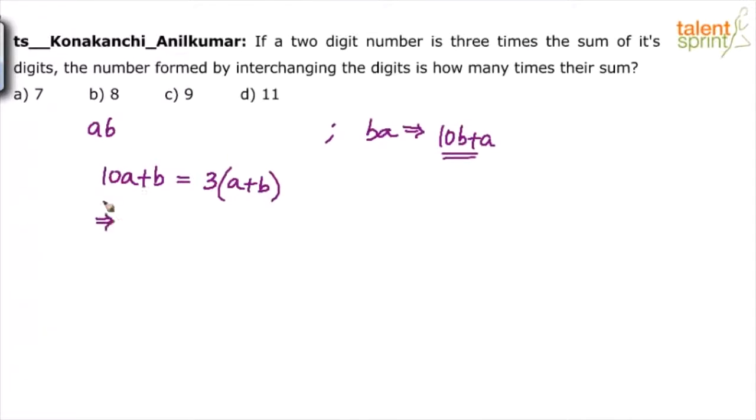What do we get? 10A minus 3A. 7A equals to 3B minus B, 2B. Or we can say A equals to 2B by 7. Substitute this here.